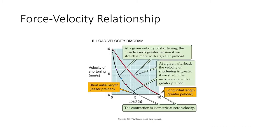Another thing to remember is the load and force-velocity relationship. At any given velocity of shortening, the muscle exerts greater tension if we stretch it with a greater preload — and that's true for cardiac muscle. At any given afterload, if we add resistance, the velocity of shortening is greater if we stretch the muscle with a greater preload. Contracting at a slower speed produces greater force, and any pre-stretch allows the heart to pump more effectively. This will make more sense later when we cover preload and afterload, but similar principles apply in cardiac muscle as in peripheral muscle.